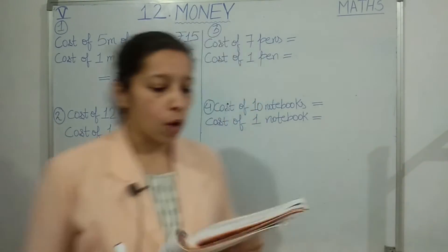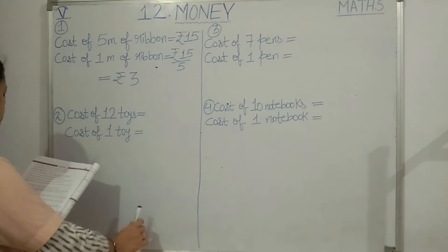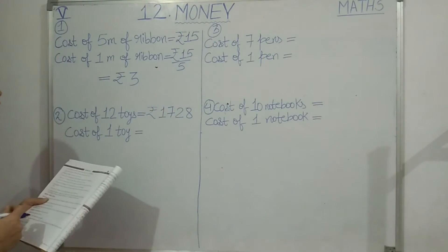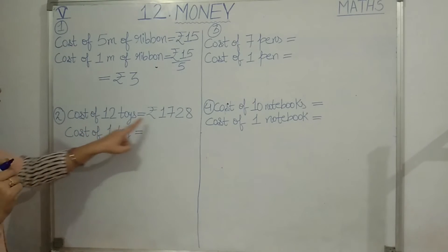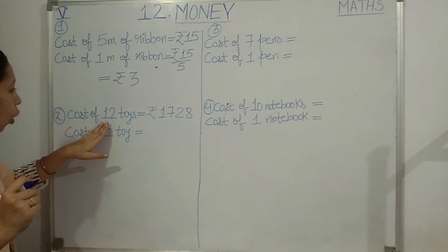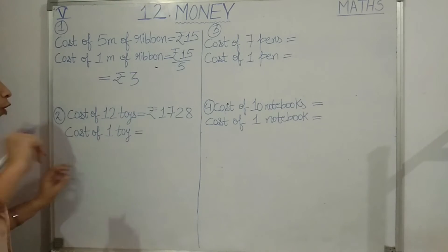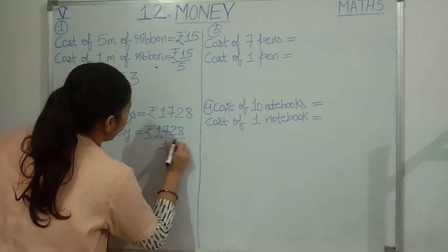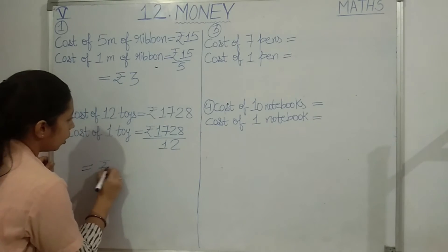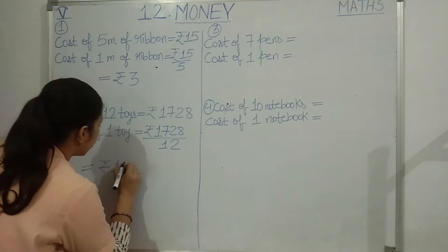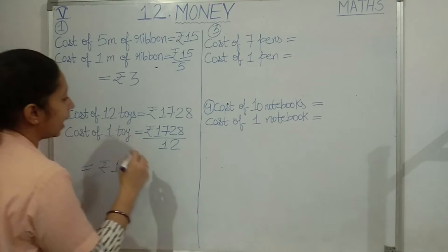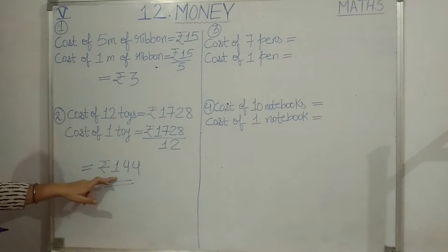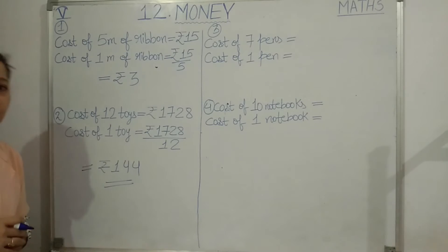Question 2: The cost of 12 toys is rupees 1728. Find the cost of one toy. The cost of multiple toys is given, so we divide: rupees 1728 divided by 12. Performing the long division - 12 ones are 12, working through the steps - we get rupees 144 as the cost of one toy. To verify: 144 multiplied by 12 gives back rupees 1728.